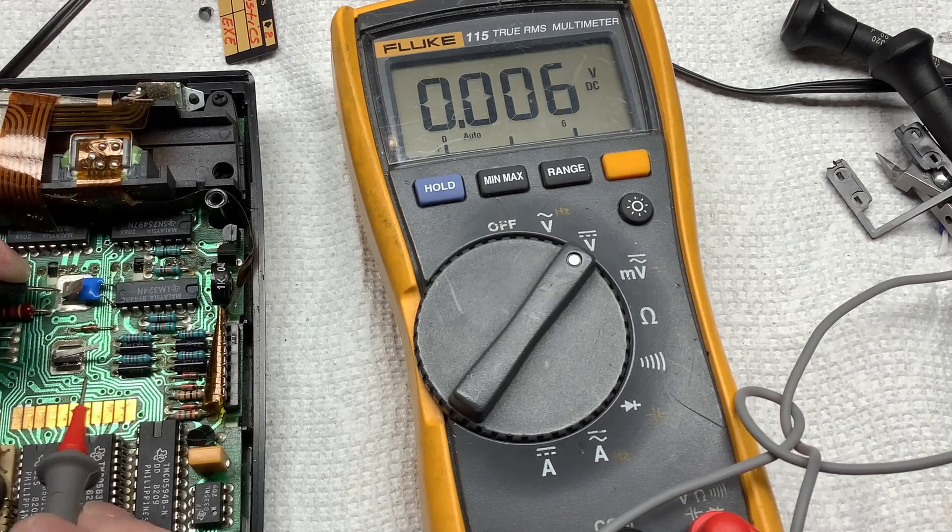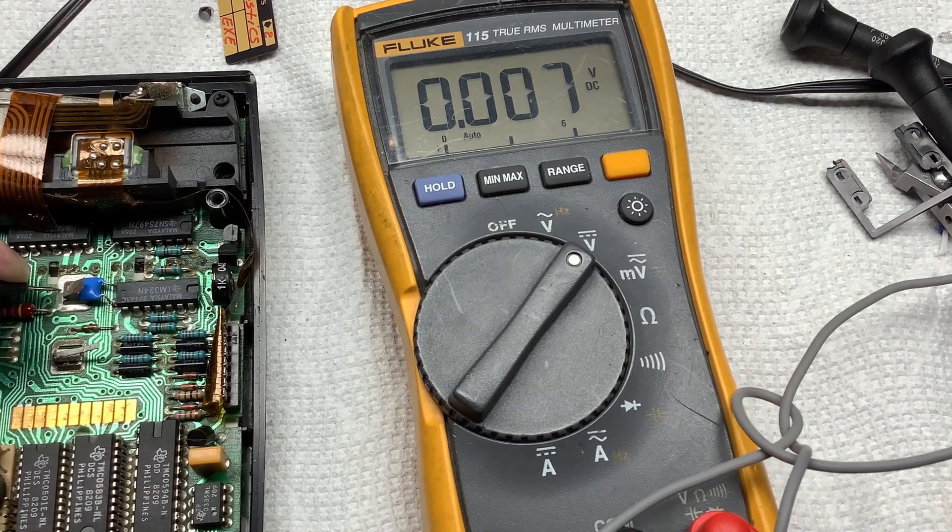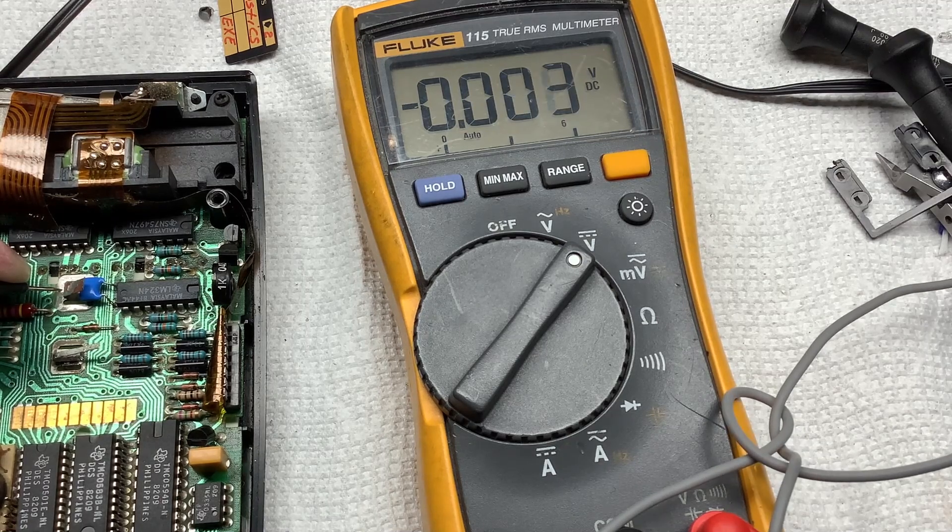I think the corrosion kind of leaks in on the pins and gets inside there and causes corruption. But these types of bullet tantalum caps are well known to be really all fading away and causing issues.